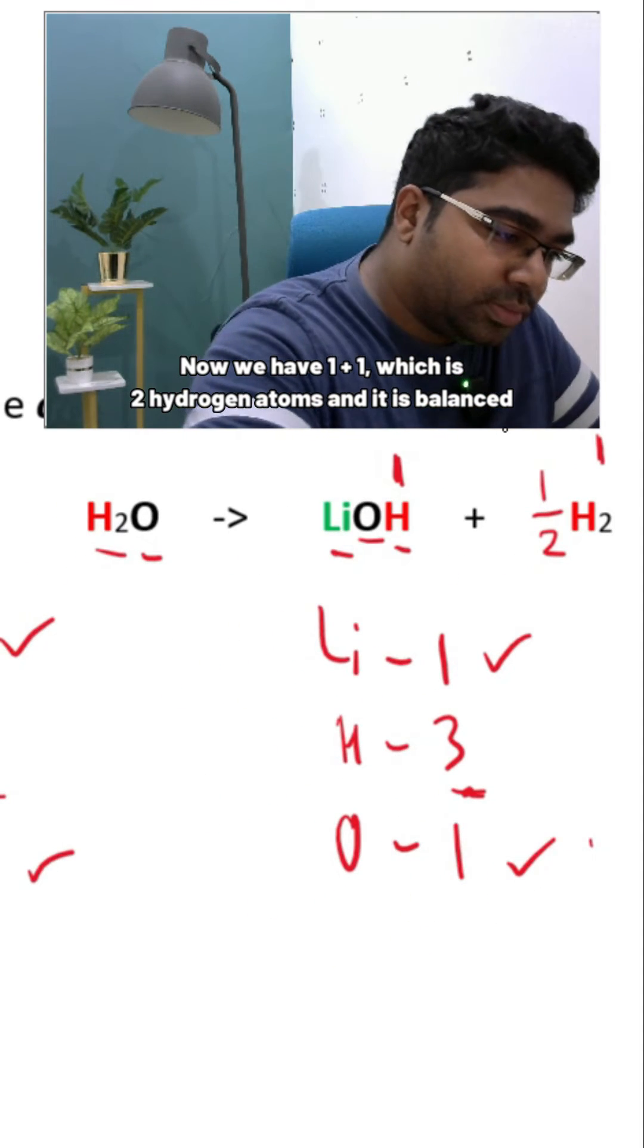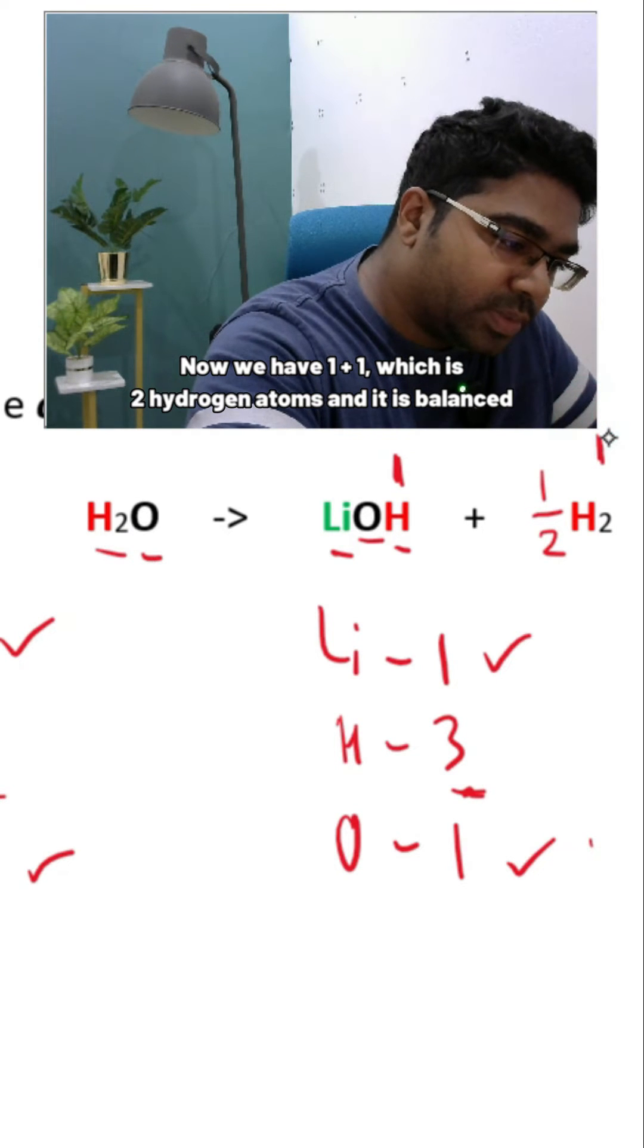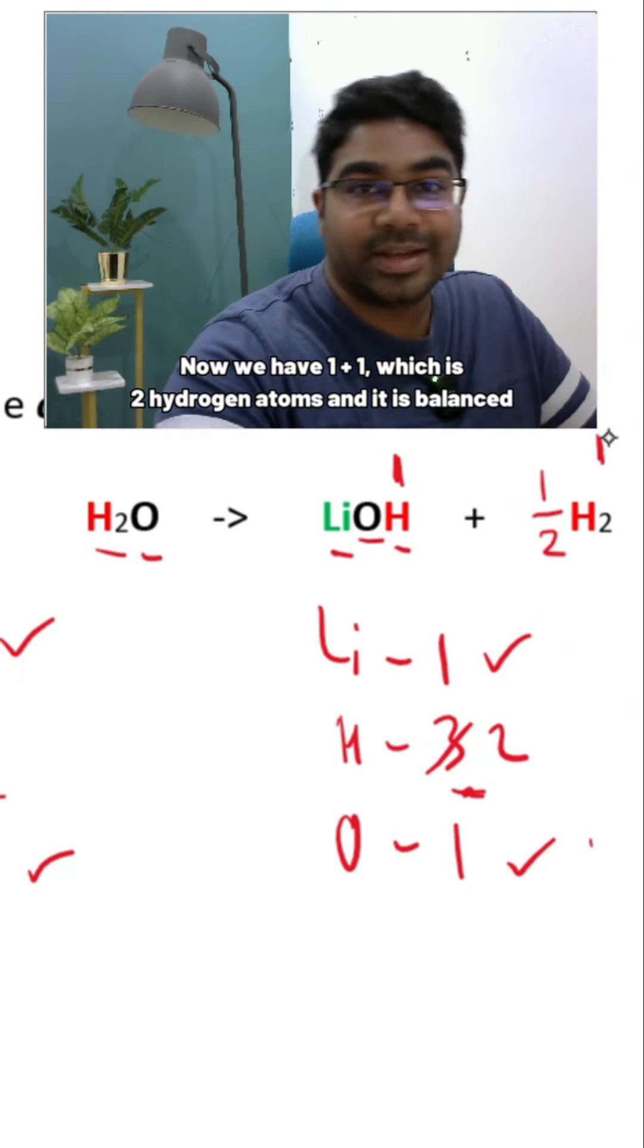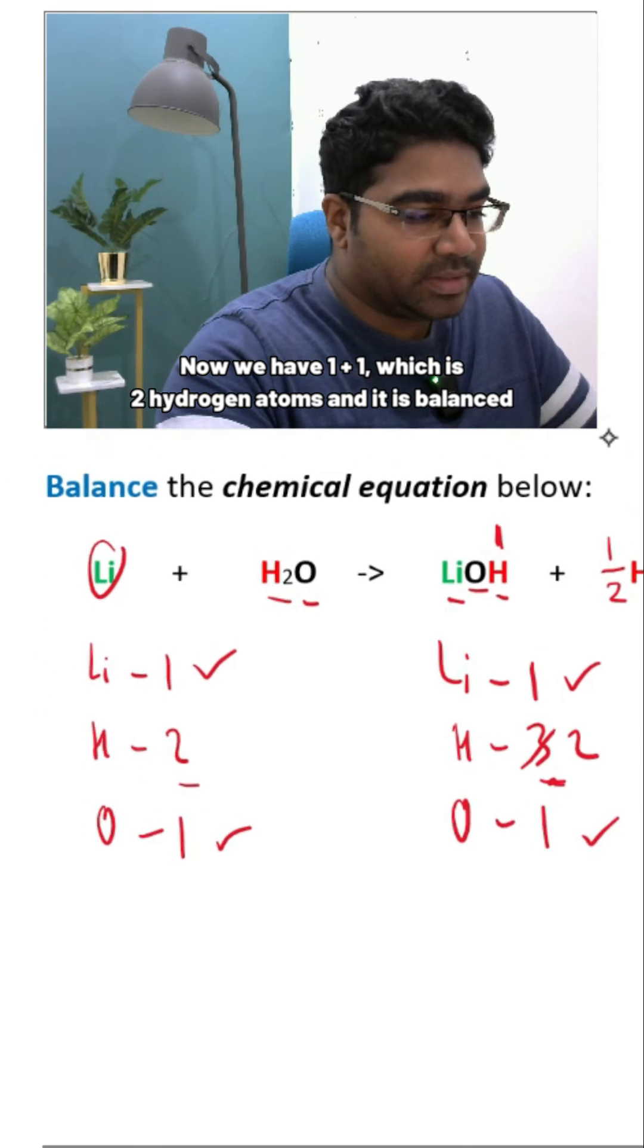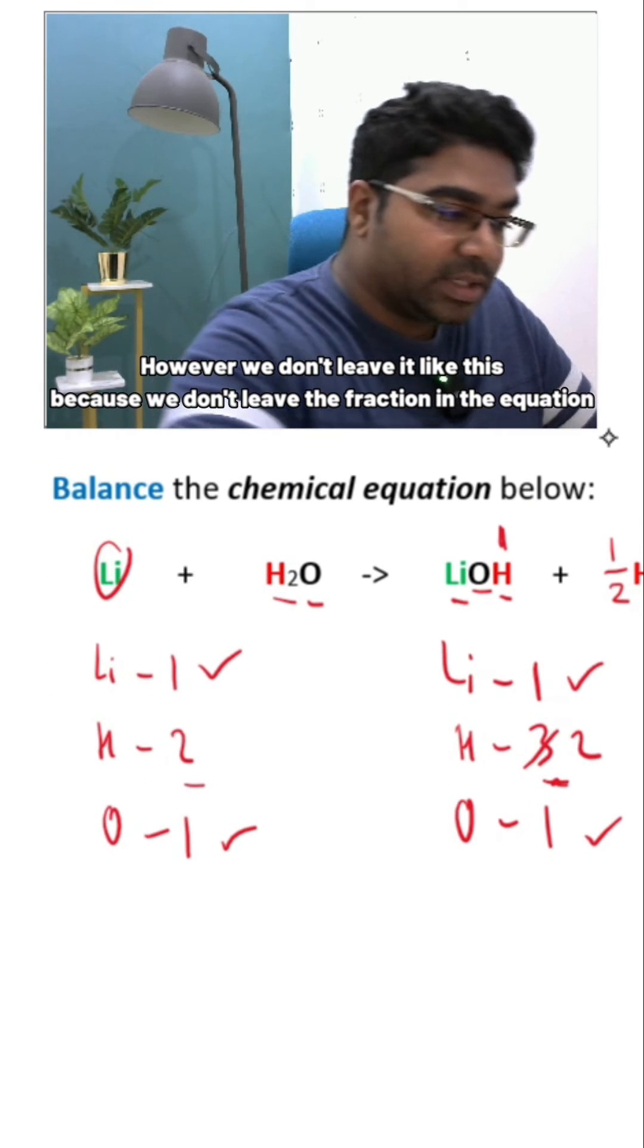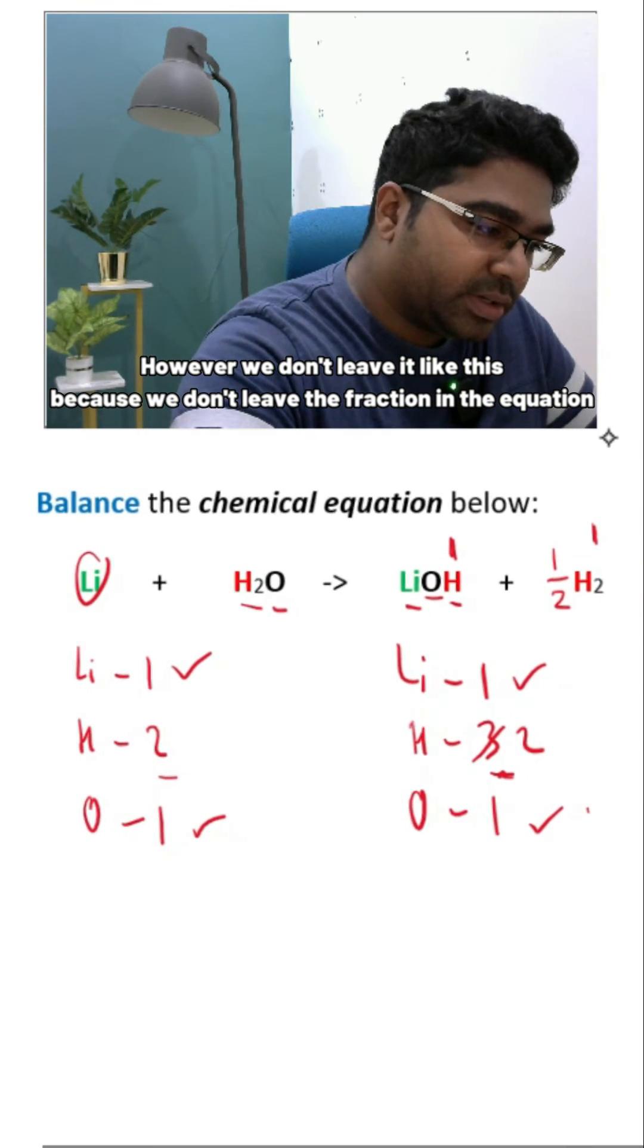And now we have one plus one which is two hydrogen atoms and it is balanced. However, we don't leave it like this because we don't leave the fraction in the equation.